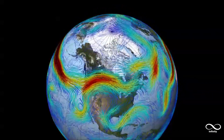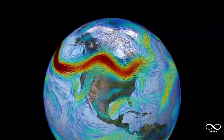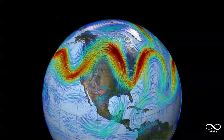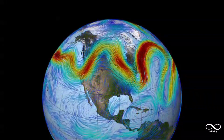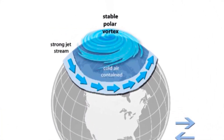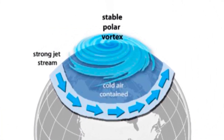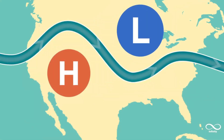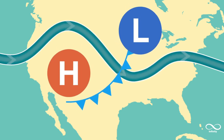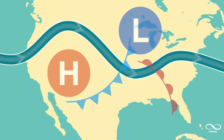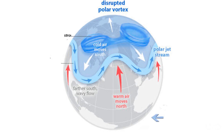Polar vortices play a significant role in the global climate. These large, low-pressure swirls of cold air influence wind patterns and temperature distribution on our planet. When the polar vortices are strong and stable, the jet stream also tends to be strong and follows a more or less circular path around the pole, acting as an invisible barrier and keeping the cold air confined to the polar regions, maintaining a relatively predictable climate balance.